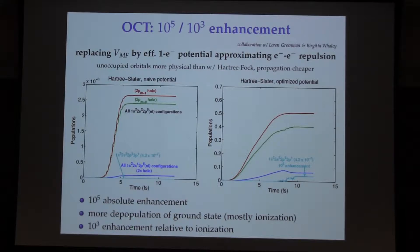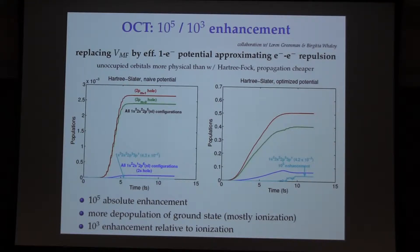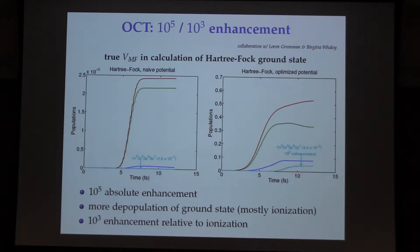We mostly have more depopulation of the ground state, which a lot of that goes to ionization, but still accounting for the ionization, we have a 10 to the 3 enhancement relative to the ionization. So that's already a significant achievement.